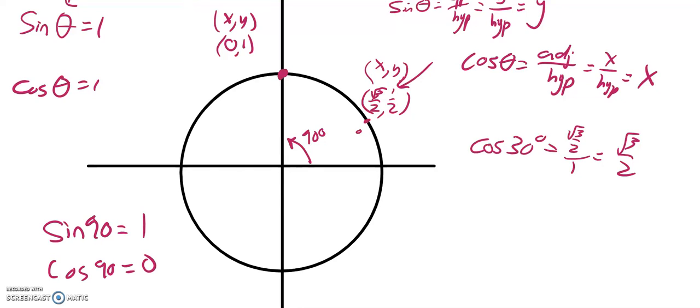So in order for sine to spit out one, theta must be 90 degrees. And notice, in order for cosine to spit out one, the x value must be one, and that only happens here at this point (1, 0), which we could say is 360 degrees, or we could also say it's zero degrees. So let's say theta here must be zero in order to make x one. All right, I hope that clears that one up.